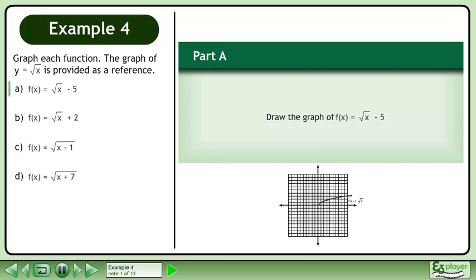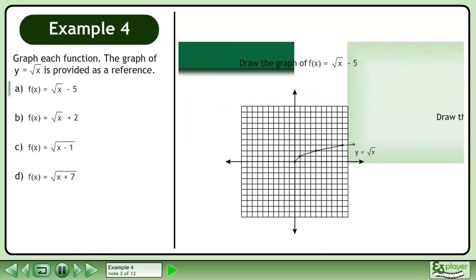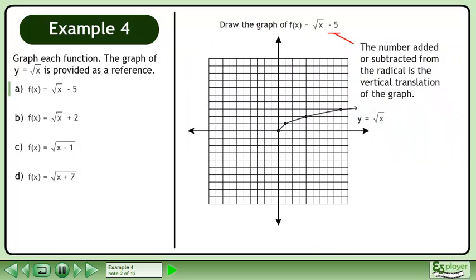In part a, draw the graph of f equals the square root of x minus 5. The number added or subtracted from the radical is the vertical translation of the graph. Move the original graph down 5 units to get the graph of f equals the square root of x minus 5.